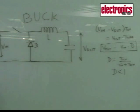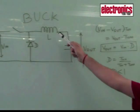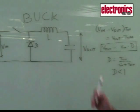Basically, this is a step-down converter where output voltage is always less than the input voltage. The basic equation for a buck converter is derived by equating the voltage-seconds across the inductor.